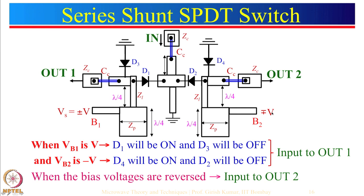Instead of using series-only or shunt-only, one can use the combination: a series-shunt SPDT switch. Here is a microstrip version. Input comes in through a coupling capacitor — provided to block DC voltage — and then can go to output 1 or output 2 depending on the diode conditions. To send input to output 1, we apply plus voltage at one control point and minus voltage at the other. The plus voltage causes one diode to conduct and the other to be in the off state.